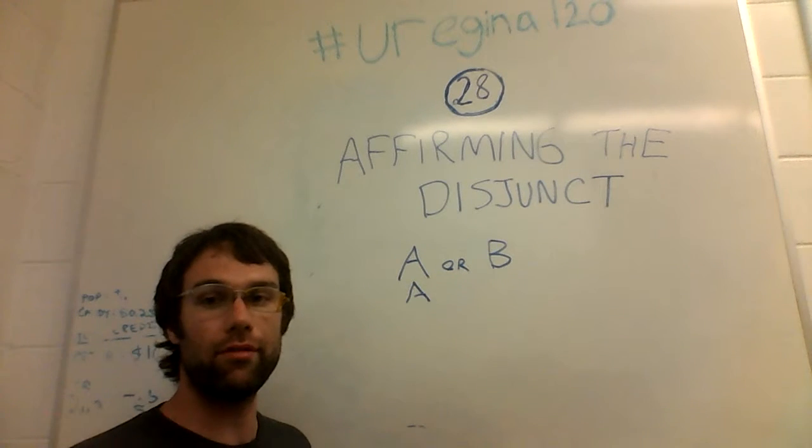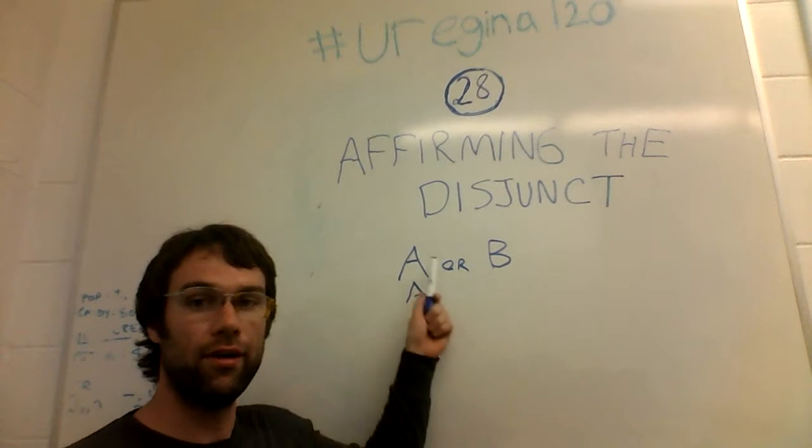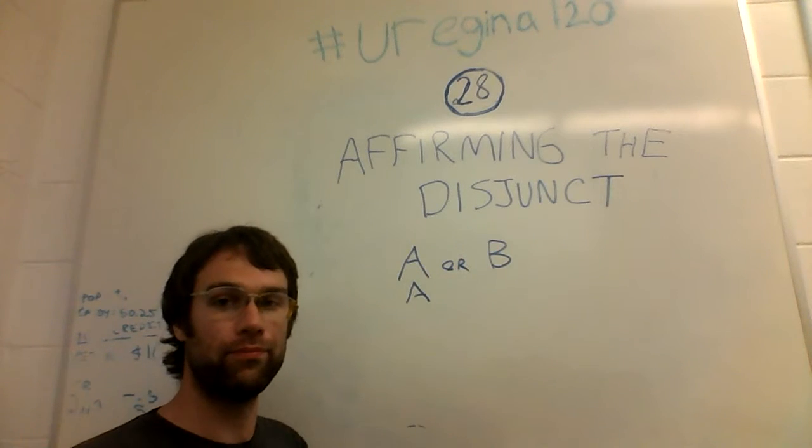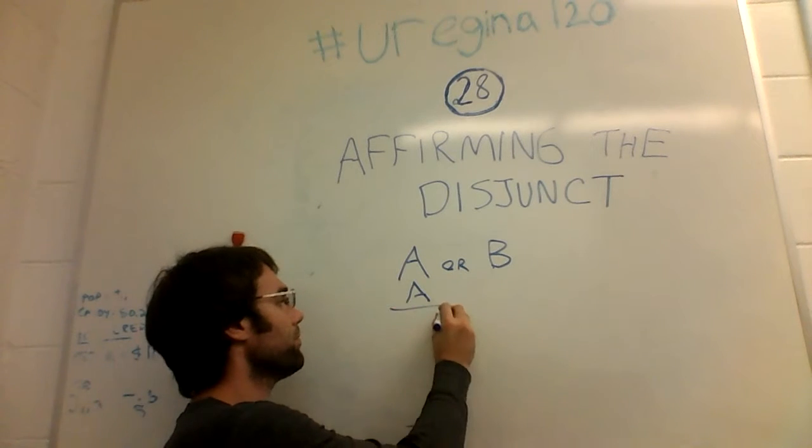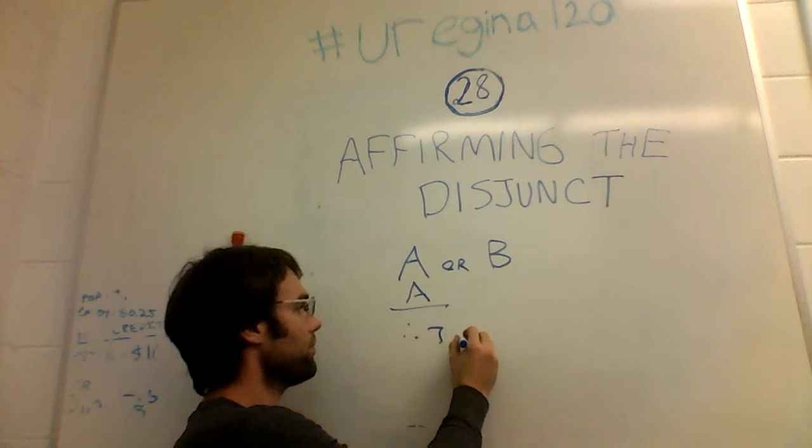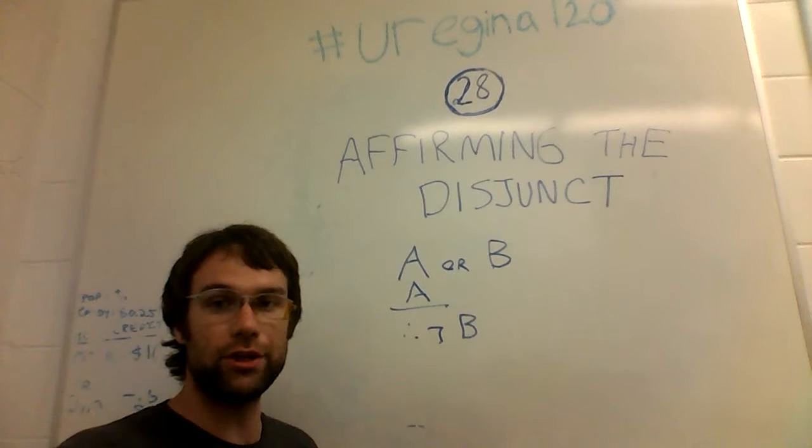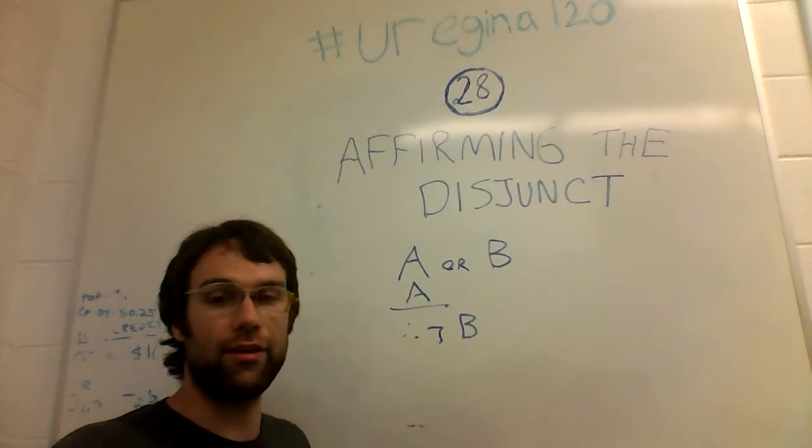The second premise, the second part of the argument, is A, or basically a statement that one of these two things is true. And the conclusion is that the second thing is not true.